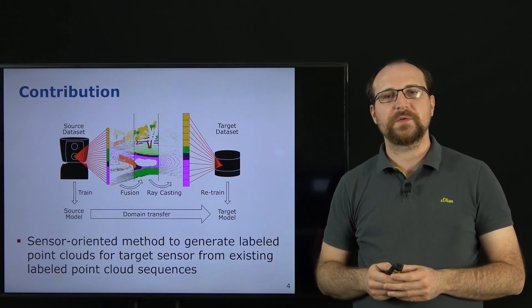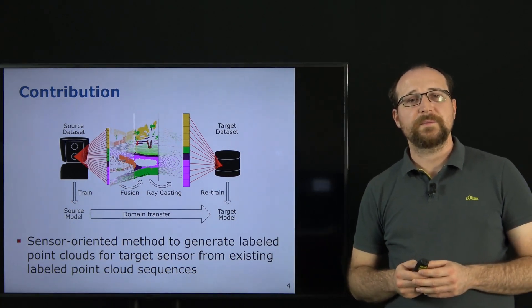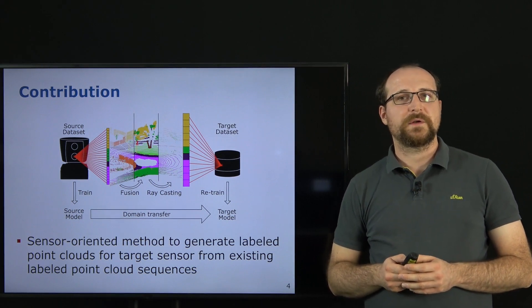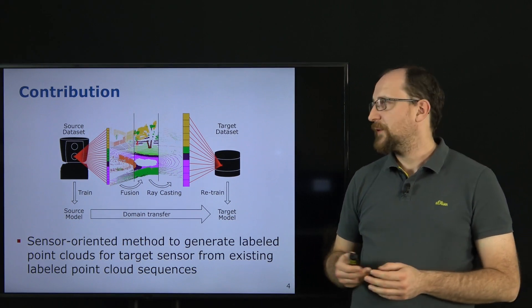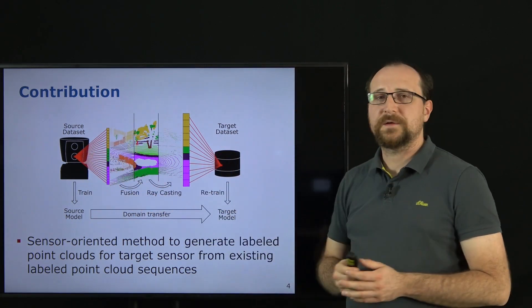In our paper we propose a sensor-oriented approach to circumvent this problem and generate labeled point clouds for a target sensor setup from existing labeled point clouds. Important to note is that we only need labels for the source data and don't need to label the target dataset again.